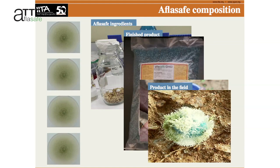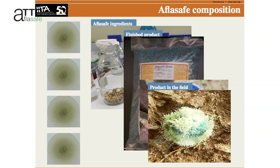The Aflasafe product contains sterile sorghum, so when the farmer spreads it into the field, it's not going to germinate. This is just to allow us to distribute the strains in the crop. Here is a farmer holding Aflasafe — we cannot see those spores, but they are there.